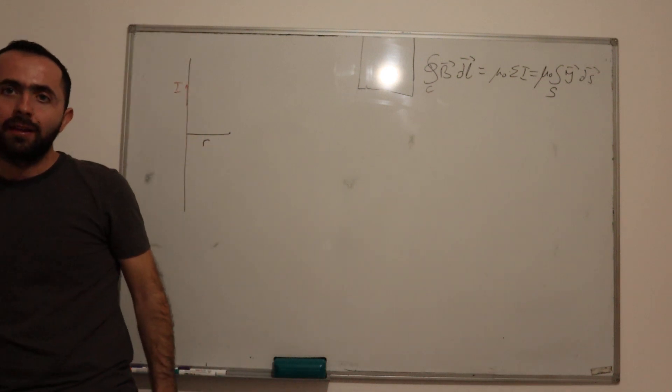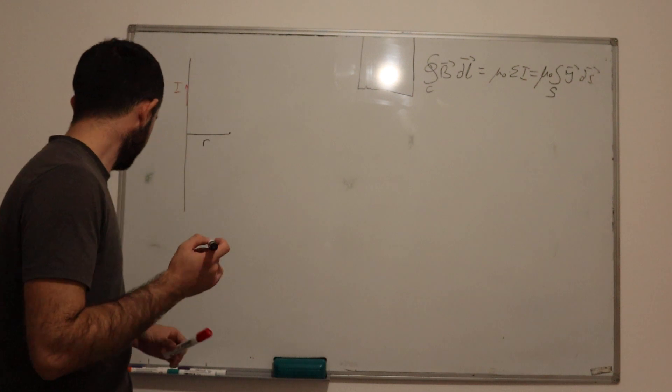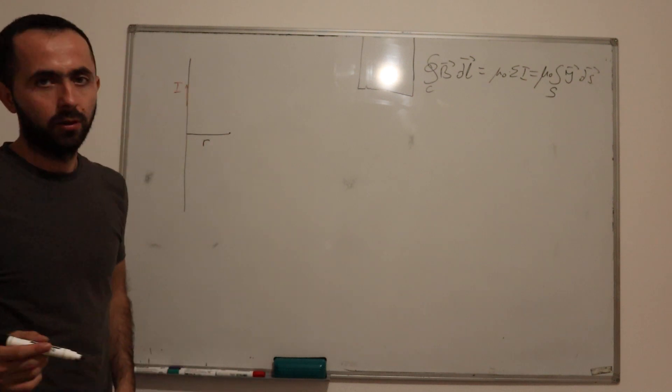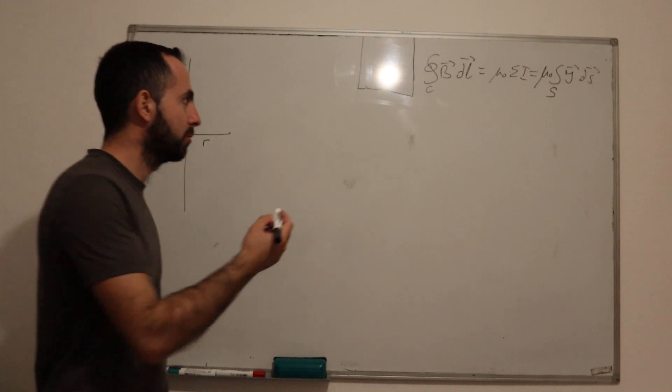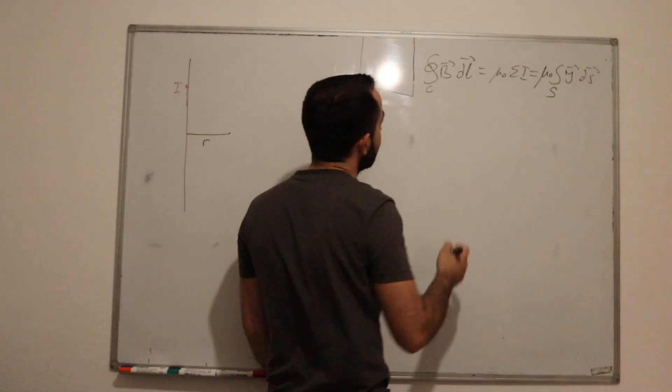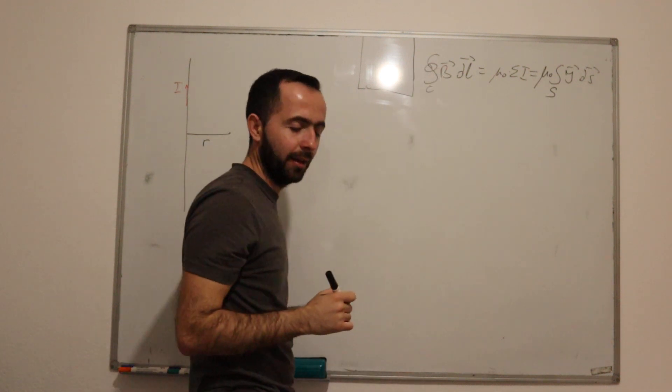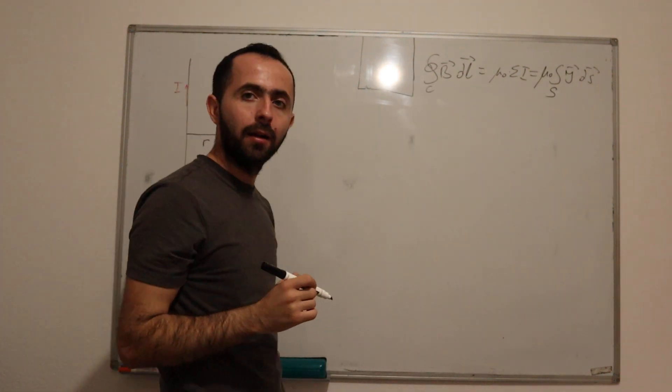In order to do that, firstly we need to know the formula of Ampere's law and it's written here where it says that the integral over closed contour C of B·dL,